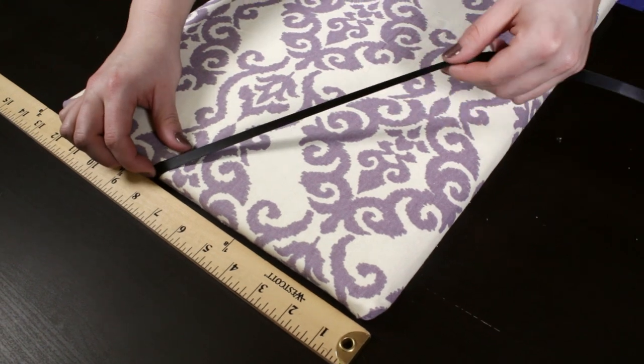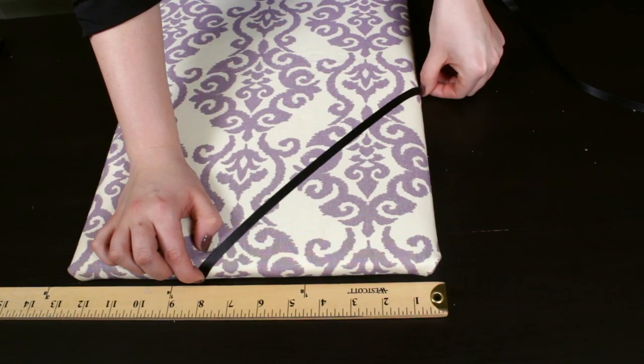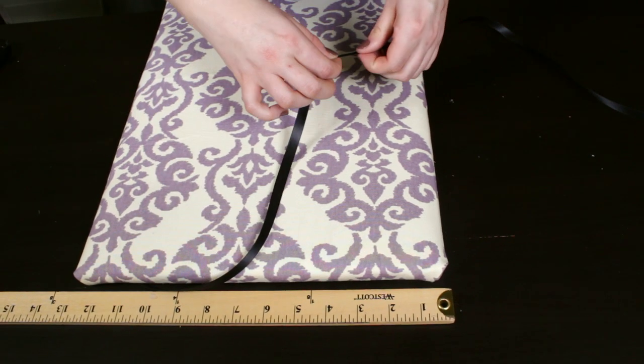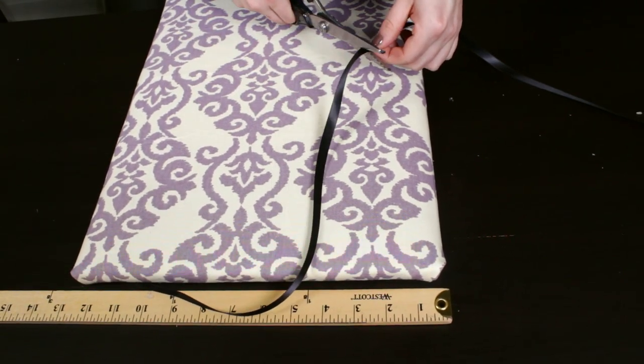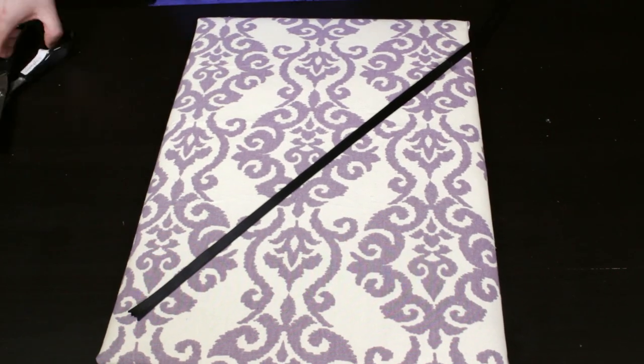Take the spool of ribbon, start from a corner, and measure 8 inches in. Make sure you're including the width of the cork board when measuring. Add an extra 2 to 3 inches and cut. Cut 3 more strips of ribbon the same length.